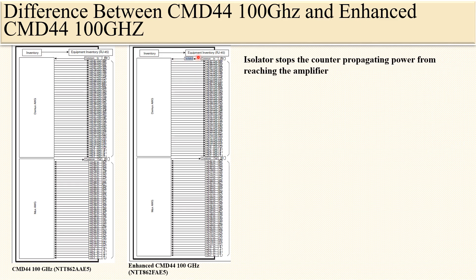The isolator stops counter-propagating power from reaching the amplifier. Suppose a transponder TX is connected to channel-in port number one and the RX is connected to channel-out port number two. But if someone mistakenly connects the transponder TX port to channel-out port number two, the power transmitted from the transponder flows through that port and propagates back in reverse toward the common input. When any power reflects back toward the common input, the reflection on the connected port increases.